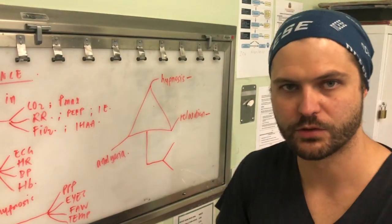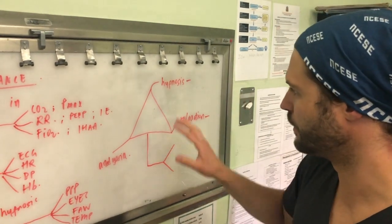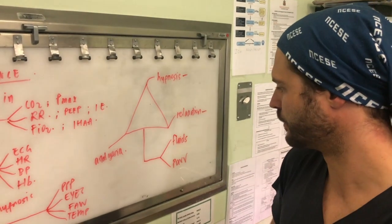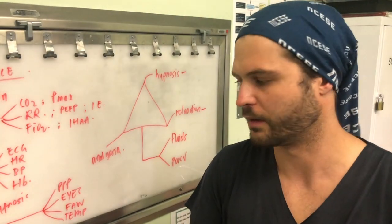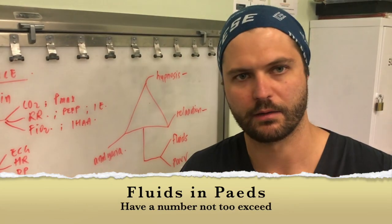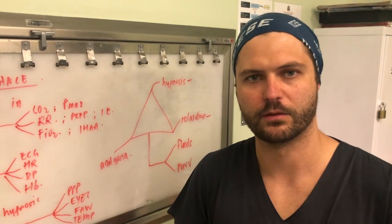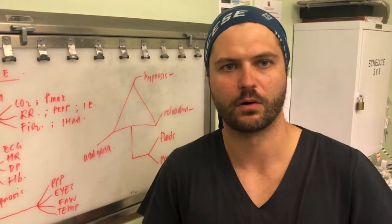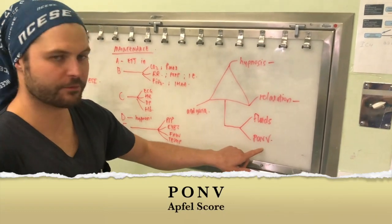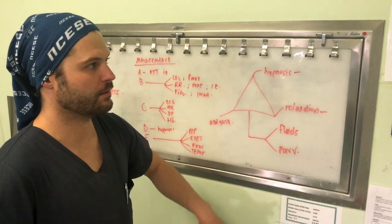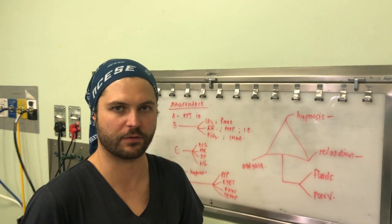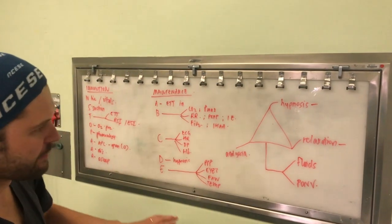Two additional aspects beyond the triad are fluids and post-operative nausea and vomiting. For fluids, in children always have a maximum volume in mind so as not to overload the patient; the same applies to adults. For PONV, we can use the APFEL score to calculate the patient's risk and give drugs accordingly — dexamethasone or ondansetron if available.